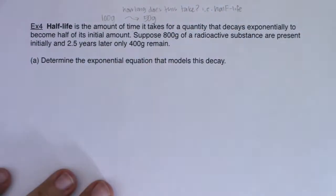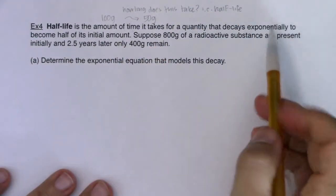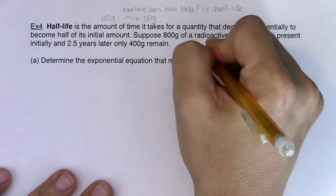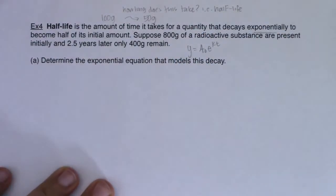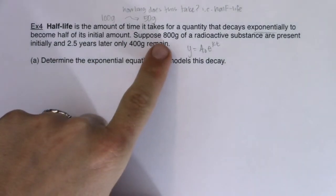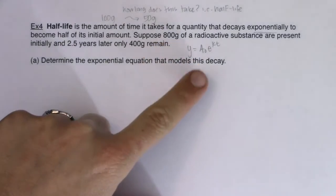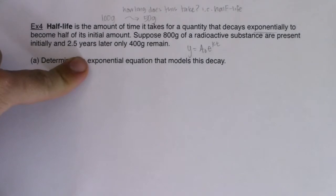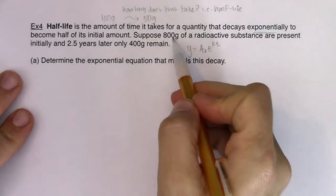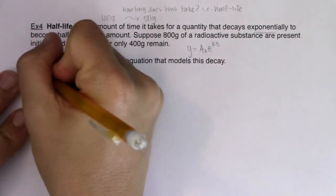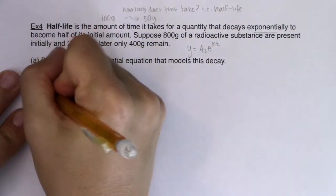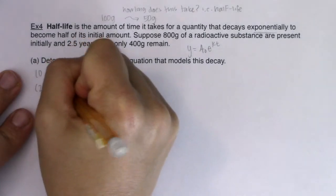Let's take a look at the setup. It's decaying exponentially, so I know I'm going to be going with A sub zero E to the KT. Let's see if we can spot some ordered pairs in here. It says suppose 800 grams of a radioactive substance are present initially, and two and a half years later, half of it remains. I see two ordered pairs here: I've got my initial amount, the ordered pair (0, 800), and then I also see the time unit of (2.5, 400).